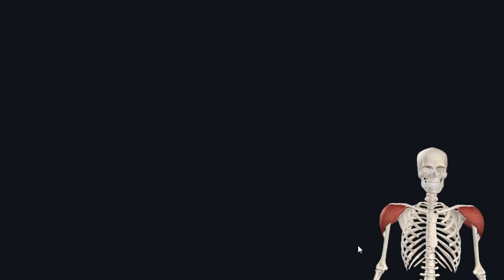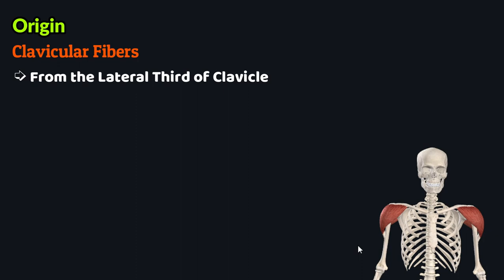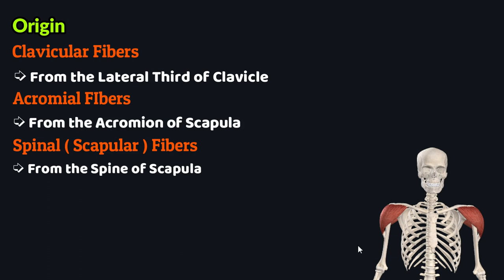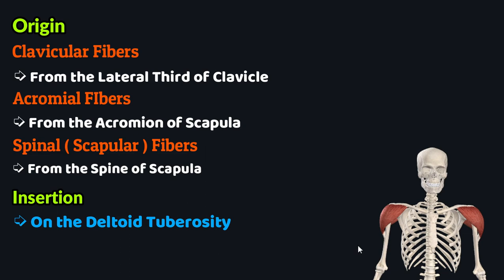Now let's review these points about the deltoid muscle. The deltoid muscle has three sets of fibers which originate from different areas: the clavicular fibers originate from the lateral third of the clavicle, the acromial fibers originate from the acromion of the scapula, and the spinal or scapular fibers originate from the spine of the scapula. The deltoid muscle inserts on the deltoid tuberosity on the lateral aspect of the humerus.